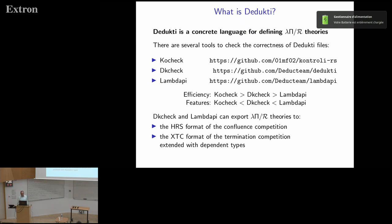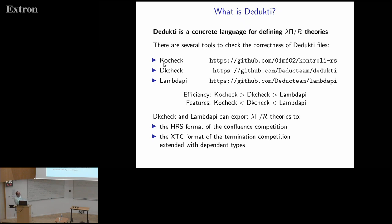Historically, the first checker developed was Dedukti check. More recently, Michel Ferber developed a new checker called KO check, written in Rust and much more efficient. Both are useful when you have very big files. LambdaPi is less efficient but has more features that are helpful for generating Dedukti files.